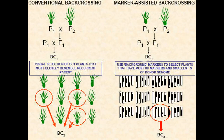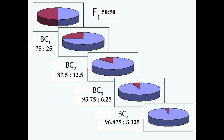Backcrossing involves making an initial cross between the donor and recurrent parents. The resultant F1 progeny have 50% of their genetic material from each parent. F1 individuals are crossed to the recurrent parent to develop a Backcross 1 population. Individuals from the BC1 population are once again crossed to the recurrent parent. Each generation of backcrossing reduces the proportion of the donor parent present in the population by half.